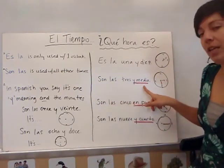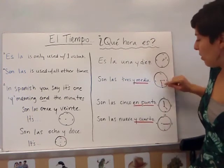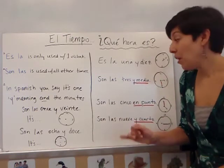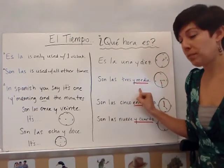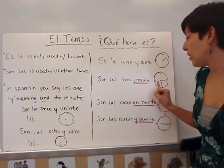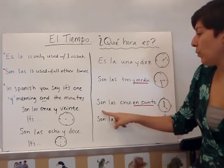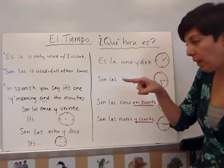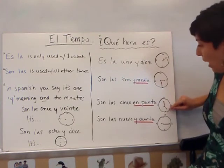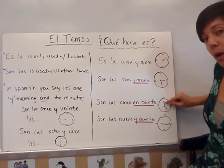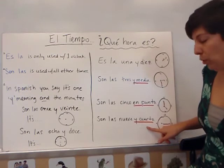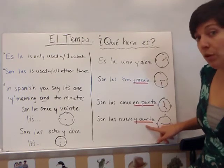So here we have a few examples. Son las tres y media. What do you think 'media' means? Look at this pointing straight down. Son las tres y media — media actually means 'half,' so this is saying it's three and a half. Son las tres y media. And then here we say son las cinco en punto. Punto is a cognate meaning 'on the dot' or 'on the point.' And finally we have son las nueve y cuarto. Todos repiten: cuarto.